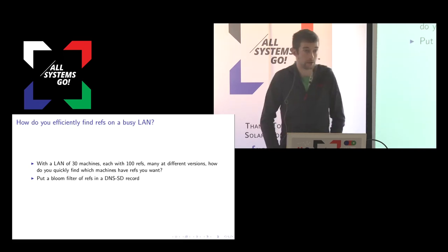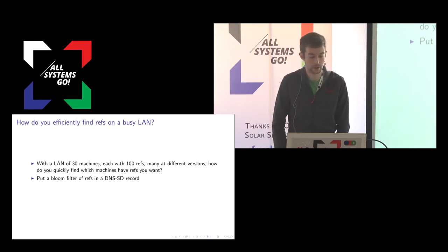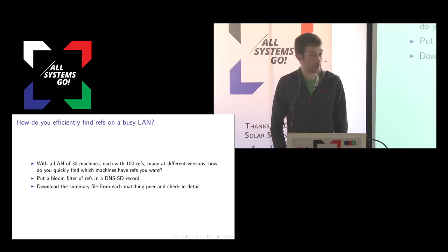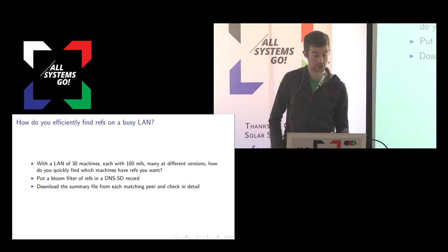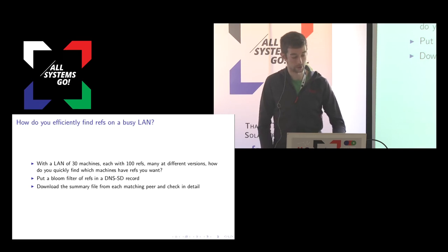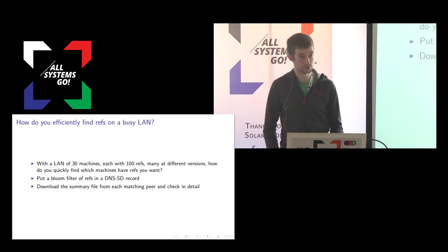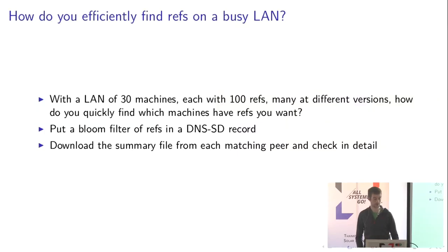The solution is to take a bloom filter of the refs on each OS tree and put it in a DNS-SD record with Avahi. When updating from a peer, you check whether the ref you want is in their bloom filter. If it is not, you skip it. If it potentially is — bloom filters are not entirely deterministic — you download the summary file from that peer and check if it actually contains the ref or is a false match. If it does contain the ref, you download that commit, check the GPG signatures, verify the ref binding, then download the rest of the commits and update.